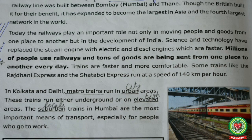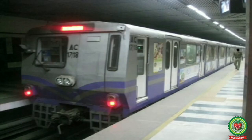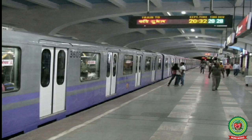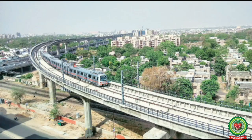In Kolkata and Delhi, metro trains run in urban areas. These trains run either underground or on elevated areas. Underline 'metro' in the term — metro trains are trains that run on a track within a city. Underline 'urban' and write 'city,' and underline 'elevated' and write 'high.' Kolkata Metro is the first metro in India. The first metro service was launched in Kolkata in 1984 by former Prime Minister Indira Gandhi.